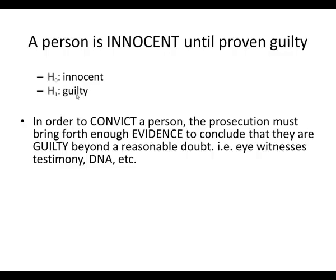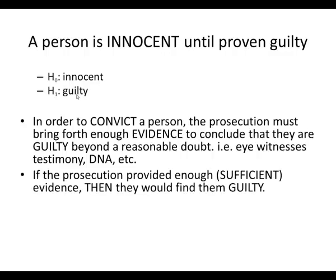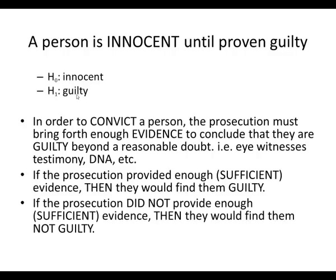In order for us to convict a person, the prosecution has to get enough evidence. They have to have eyewitness testimony, they have to have DNA, they have to have enough proof so that the jury will come back and say that they believe this person is guilty. If the prosecution does this, then they have sufficient evidence — they have a statistically significant amount of information to say that this person is guilty.